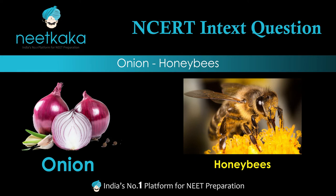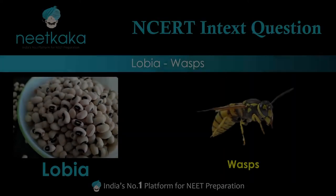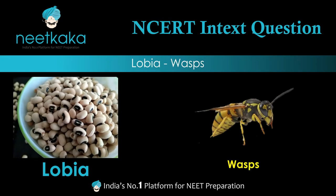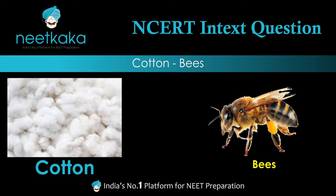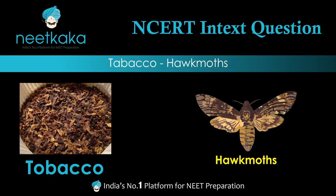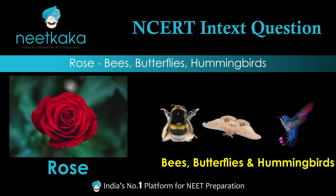In onions, insects such as honey bees are used as pollinators. In lobia, insects such as wasps are the pollinators. In cotton, bees are the pollinating agents. In tobacco, it can self-pollinate but sometimes uses pollinators like hawk moths. In rose, bees, butterflies, and hummingbirds are the common pollinators.